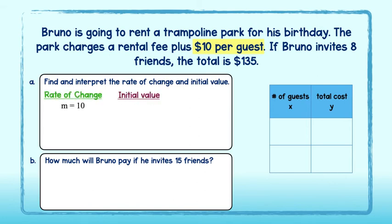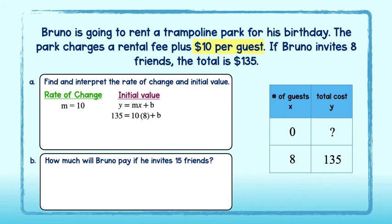To find the initial value, we will use the equation of a line in slope-intercept form. The rate of change is 10, and we are trying to find the initial value, b. It sure would be nice to have some x and y values to plug into this. Based on the information we've been given, we can fill in a table. The problem does tell us that for 8 people it would cost $135 — there's an ordered pair we can use. We plug in 8 for x and 135 for y. 10 times 8 is 80. Subtract 80 from both sides to get 55 equal to b. The rental fee is $55.